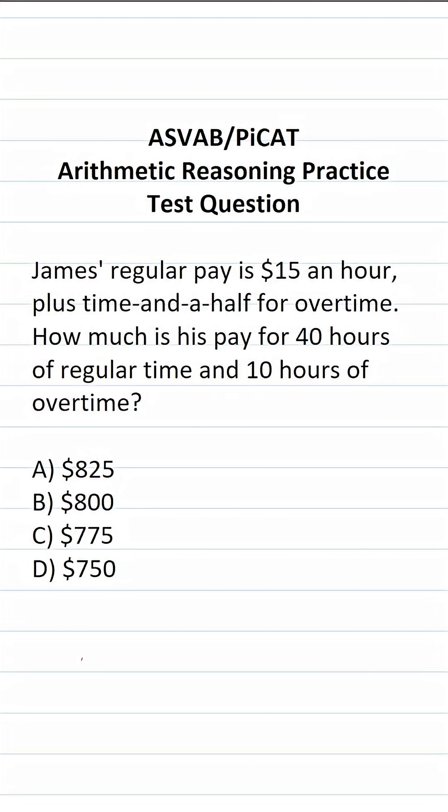This arithmetic reasoning practice test question for the ASVAB and PiCAT says, James's regular pay is $15 an hour, plus time and a half for overtime. How much is his pay for 40 hours of regular time and 10 hours of overtime?